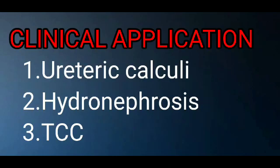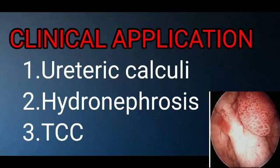Now let us discuss some clinical conditions related to the ureter. The first is ureteric calculi. Calculus means stones, so ureteric calculi denotes the presence of stones in the ureter. Sometimes these can obstruct the ureter and cause hydronephrosis, meaning accumulation of urine or fluid in the ureter due to obstruction.